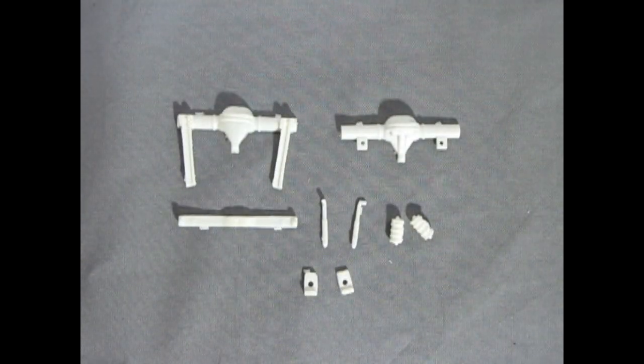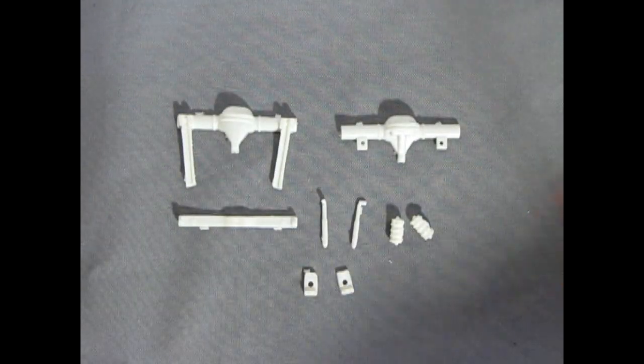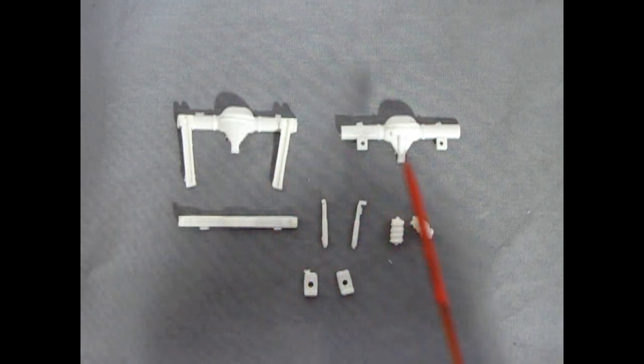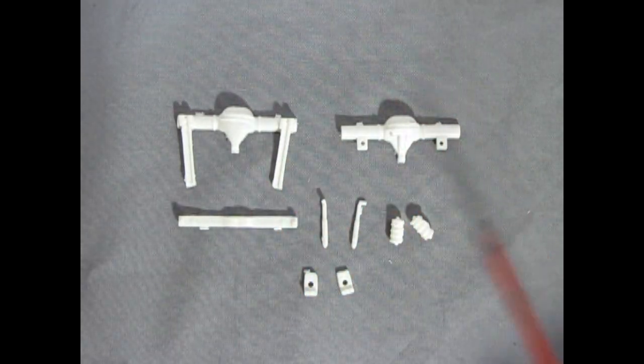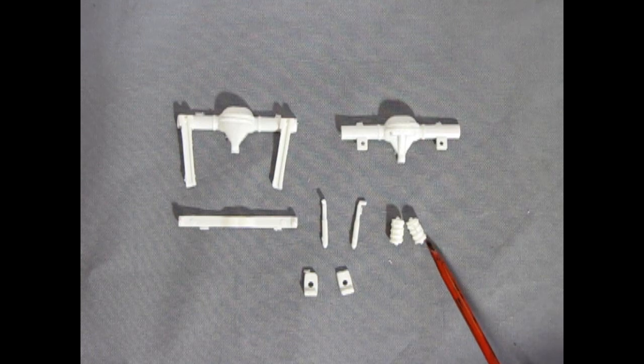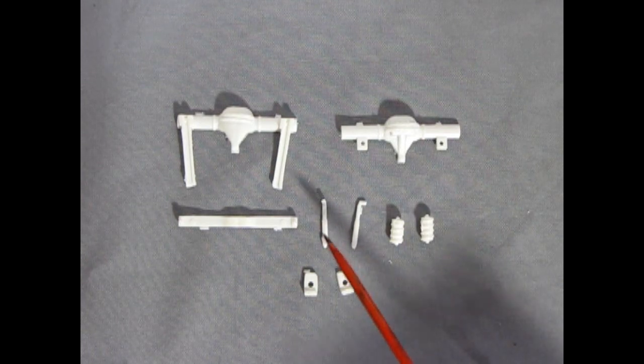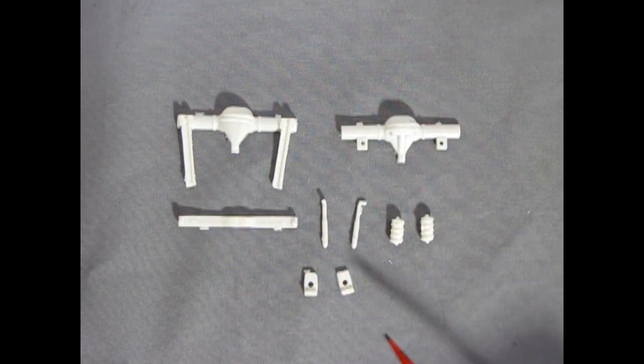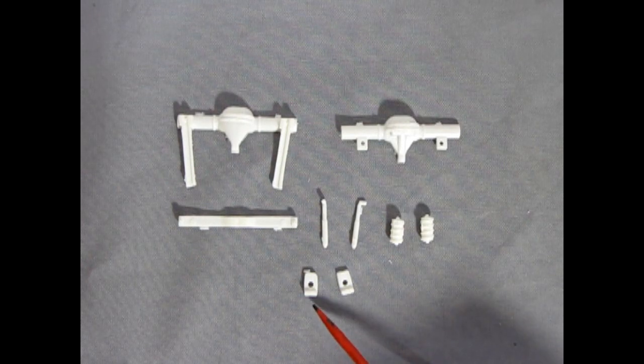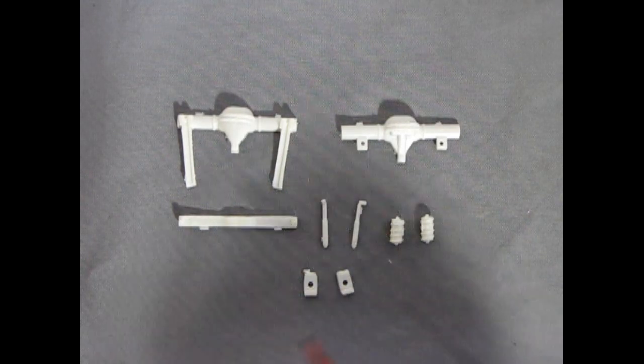And here we have our suspension components for the undercarriage. We have the upper and lower differential going in with our springs here and again there is a bit of flash on them. Shock absorbers and the cross member and then our front suspension just consists of these two little blocks.